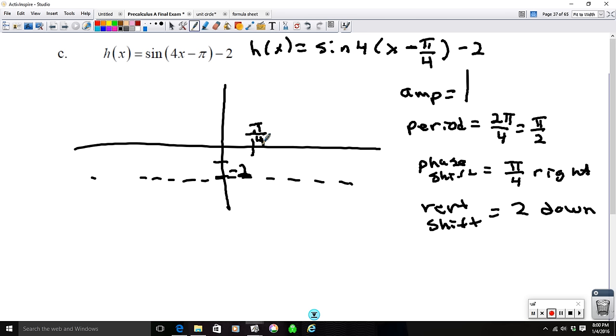The period is actually equal to pi over 2. So you have to do pi over 4 plus pi over 2, which is pi over 4 plus 2 pi over 4. Or that will end at 3 pi over 4. So this ends at 3 pi over 4.